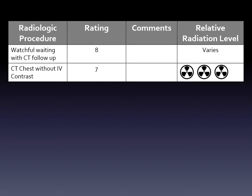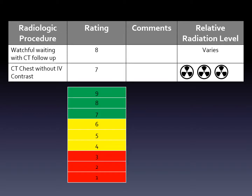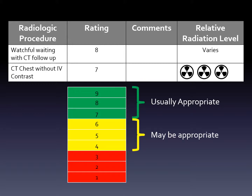You'll see a column that provides a rating, then there are comments, a relative radiation level, and a key showing what each symbol equals. The ratings are broken down on a scale of 1 to 9. High numbers mean a test is appropriate, middle numbers mean it might be appropriate, and lower numbers mean it's probably not a good test for that scenario.